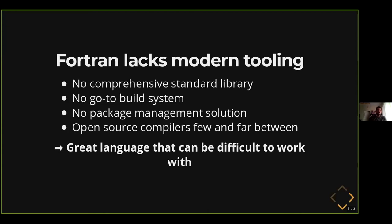It also goes the other way around. If you want to publish and release your project to the community, there's no readily available public registry of packages where people can easily discover it. And finally, open source Fortran compilers are few and far between. We basically have one mature open source compiler, GFortran, which is great. Even GFortran, because of a lack of funding and contributors, struggles keeping up with the standard and implementing the features. My takeaway is that Fortran is a great language that can be difficult to work with because of these deficiencies.